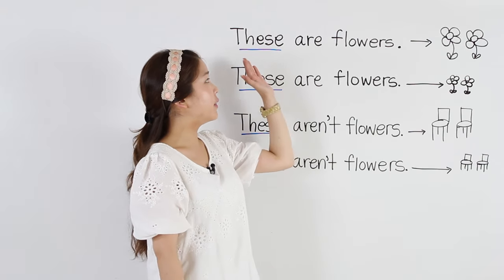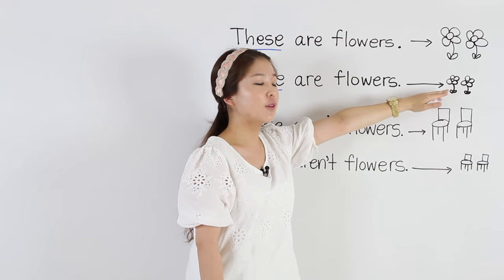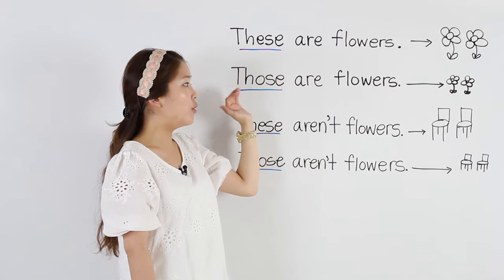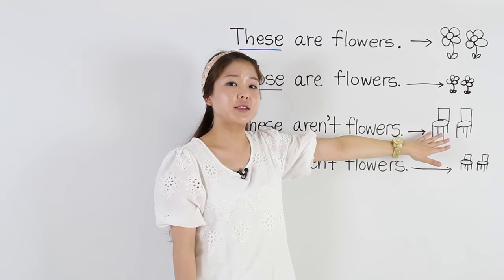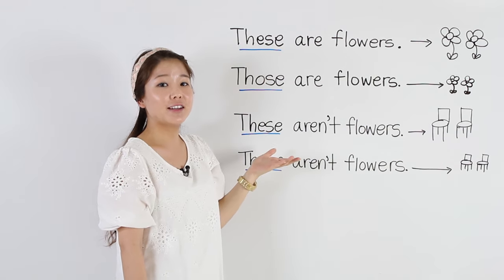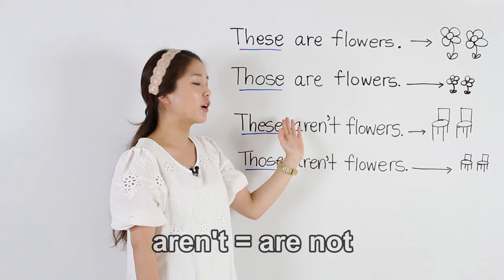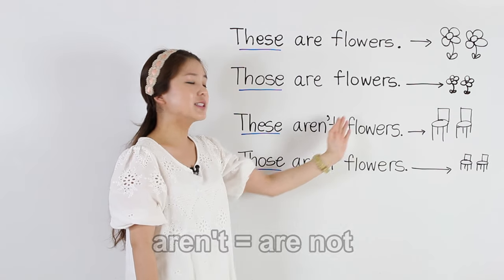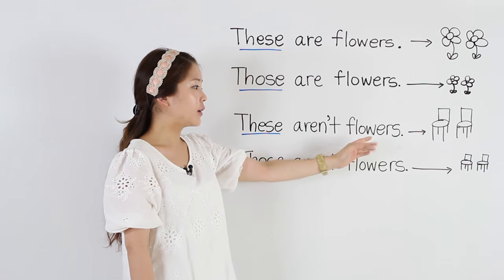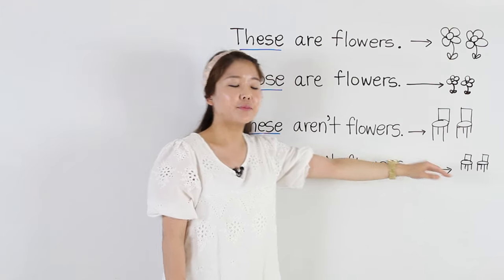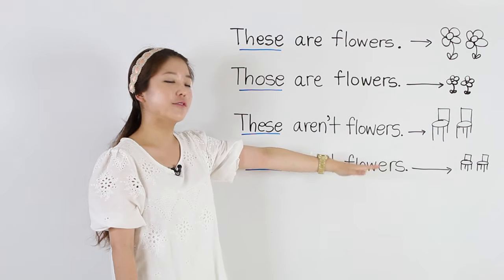So we know these are flowers — they're close by — and those are flowers for ones far away. But over here we have chairs, so we have to use the negative. We use the contraction aren't, which is short for are not. These aren't flowers. And for the chairs that are far away, those aren't flowers.